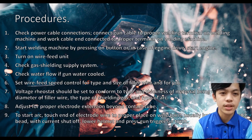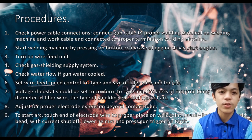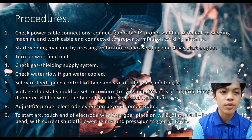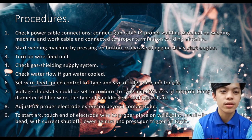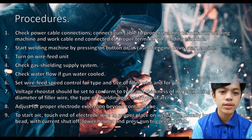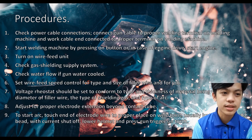Number six, set the wire feed speed control for the type and size of filler wire and for the job. Number seven, voltage settings should be set to confirm the type and thickness of material being welded, the diameter of the filler wire, the type of shielding gas, and the type of arc. Number eight, adjust for proper electrode extension beyond the contact tube. Number nine, to start up, touch the electrode wire to the proper place on the weld joint, tilt the weld bead with current shut off, lower the helmet, and press the gun trigger on touch.